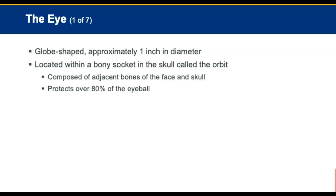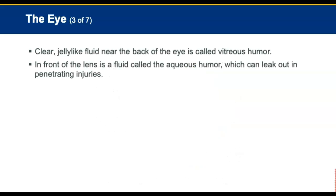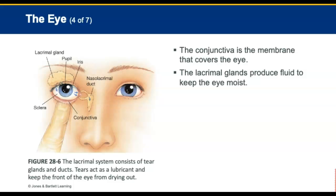The eye is a globe shape approximately one inch in diameter, located within a bony socket in the skull called the orbit, composed of adjacent bones of the face and skull. In adults, the orbit protects over 80% of the eyeball. Between and below the orbits are the nasal bones and sinuses. The eyeball, or globe, keeps its shape as a result of pressure from the fluid contained within the two chambers. The clear, jelly-like fluid near the back of the eye is called the vitreous humor. In the front of the lens, the clear fluid is called the aqueous humor. The conjunctiva is a membrane that covers the eye. The lacrimal glands, often called tear glands, produce fluid to keep the eyes moist. The tear drains on the inner side of the eye through two lacrimal ducts into the nasal cavity.